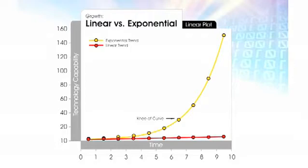There's a big difference between linear and exponential growth. If I take 30 steps linearly — 1, 2, 3, 4, 5 — I get to 30. If I take 30 steps exponentially — 2, 4, 8, 16 — I get to a billion. It makes a huge difference, and that really describes information technology.